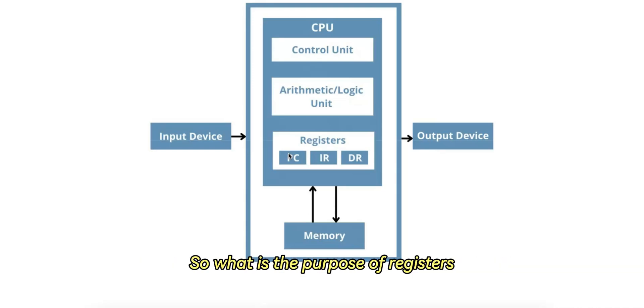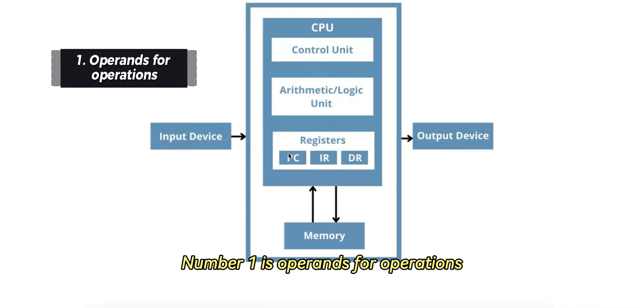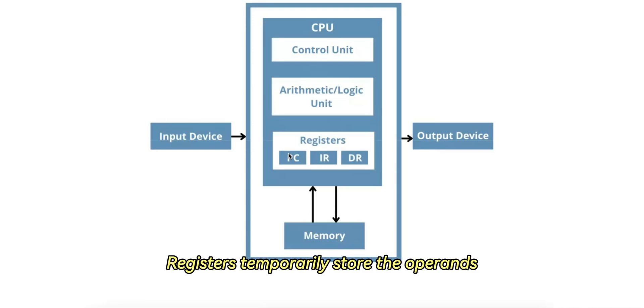So what is the purpose of registers? Number one is operands for operations. Registers temporarily store the operands, or input data, needed for the CPU's arithmetic and logic operations. For example, two numbers that need to be added together would first be placed in registers.